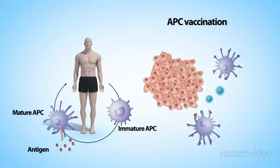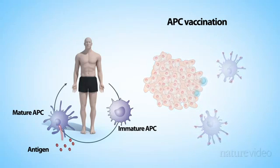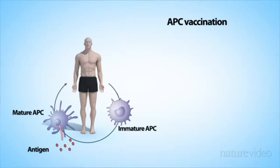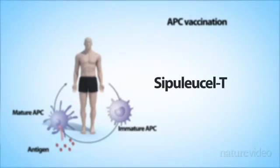The first vaccine of this type received FDA approval in 2010 for the treatment of some prostate cancers. It's known as Provenge or Sipuleucel-T. The other vaccination approaches are still experimental.